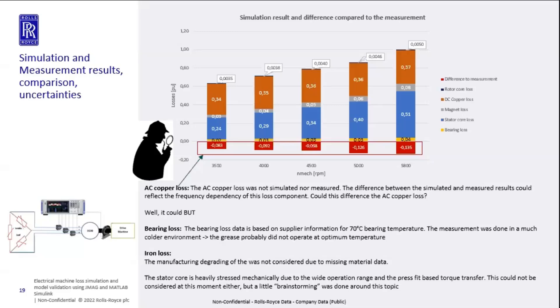This measurement was done during winter, which is why we see some temperature dependency on, for example, magnet loss. There is a slight difference between simulation and test results — the test showed slightly higher losses, as you can see in the red bars showing the difference at each rotational speed. You can see a slight frequency dependency on the loss deviation. AC copper loss is also frequency dependent, and this wasn't captured during this project, so that difference may be attributable to AC copper losses.